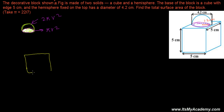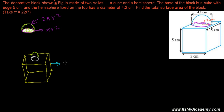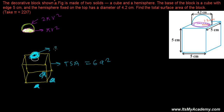Let me draw a cube. We place the hemisphere on top of the cube. To find the total surface area of this combination, we first find the total surface area of the cube. Since all sides are equal at 5 centimeters, the total surface area of the cube is 6a². Then we add the curved surface area of the hemisphere, which is 2π r².